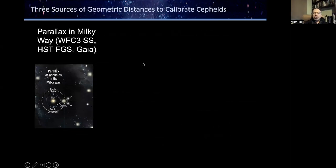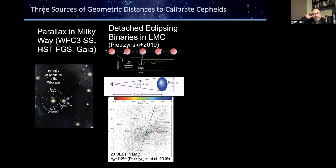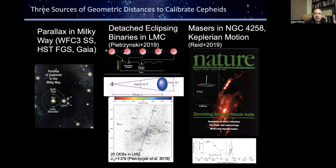Another technique is to measure a geometric distance to a nearby host like the Large Magellanic Cloud, which has many Cepheid variables in it. People measure the geometric distance to the LMC by measuring detached eclipsing binaries — stars orbiting other stars — using the timing of the orbit through eclipse events and Kepler's law. A third very powerful method is to measure water masers in Keplerian motion around a supermassive black hole in another galaxy, NGC 4258, and use that to calibrate the Cepheids in that galaxy.